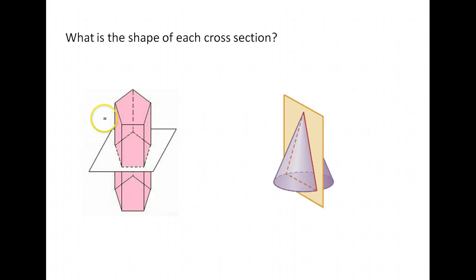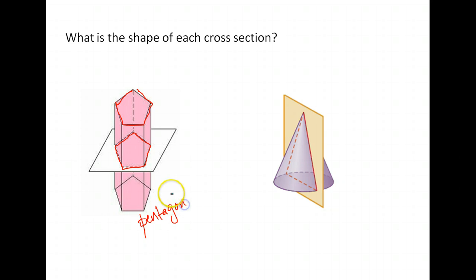What shape is each cross-section? Well, this is a prism — it's a pentagonal prism because it has a pentagon base. We're slicing straight through it, and notice the shape we get right there is a pentagon. If it were a hexagonal prism, it would be a hexagon. If it were square, it would make a square.